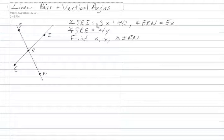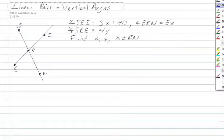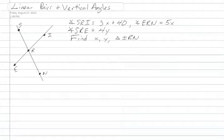Looking here, we have angle SRI, which is 3x plus 40. We're going to write 3x plus 40 into SRI. We also know that angle ERN is 5x, so we'll write 5x down here for ERN. And SRE is 4y, so SRE gets 4y.